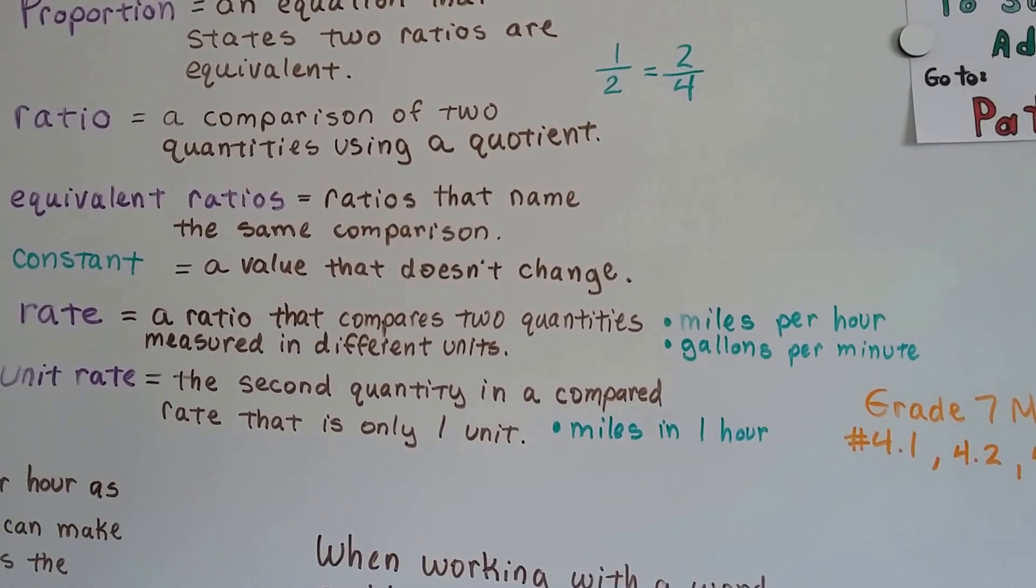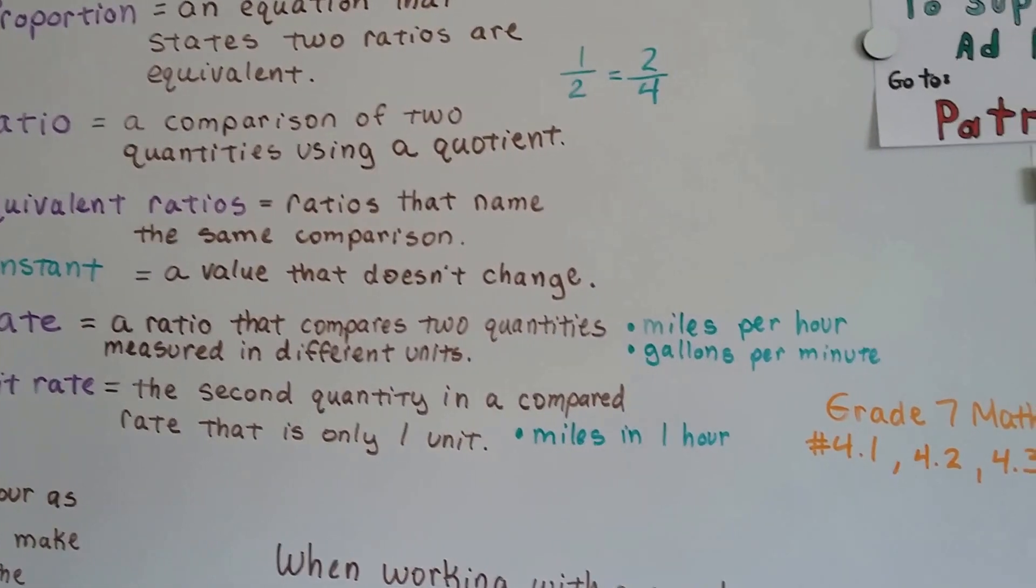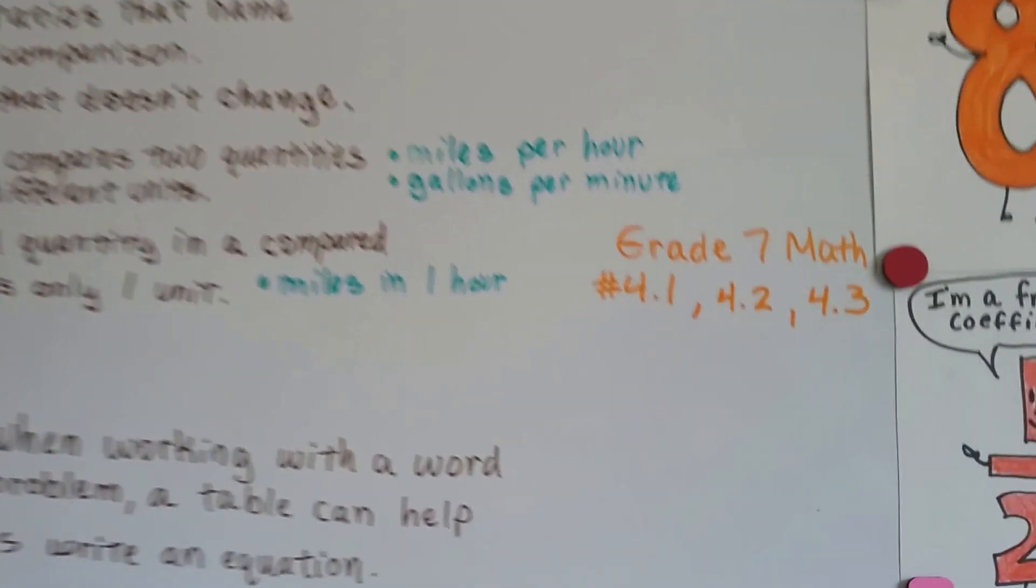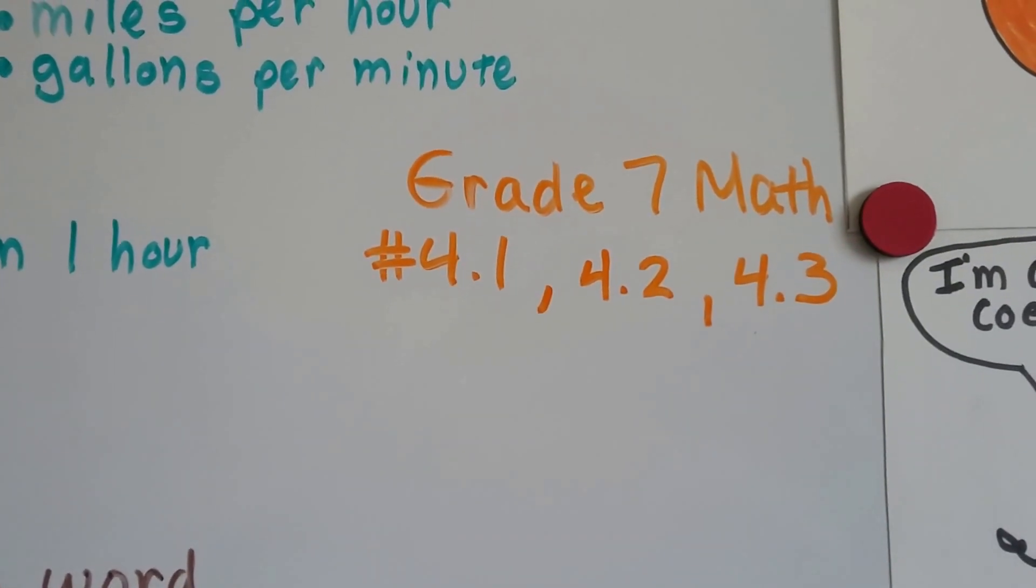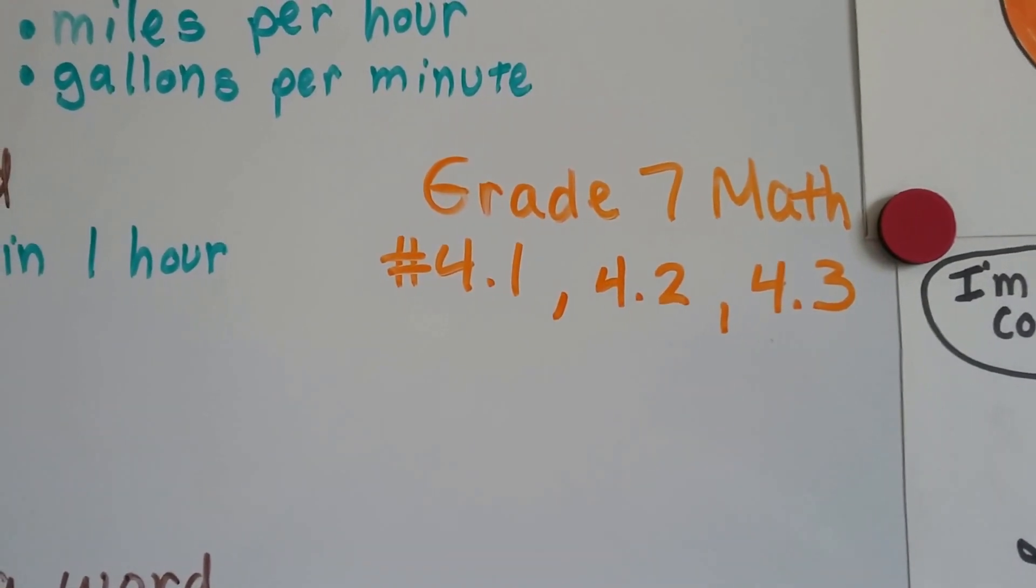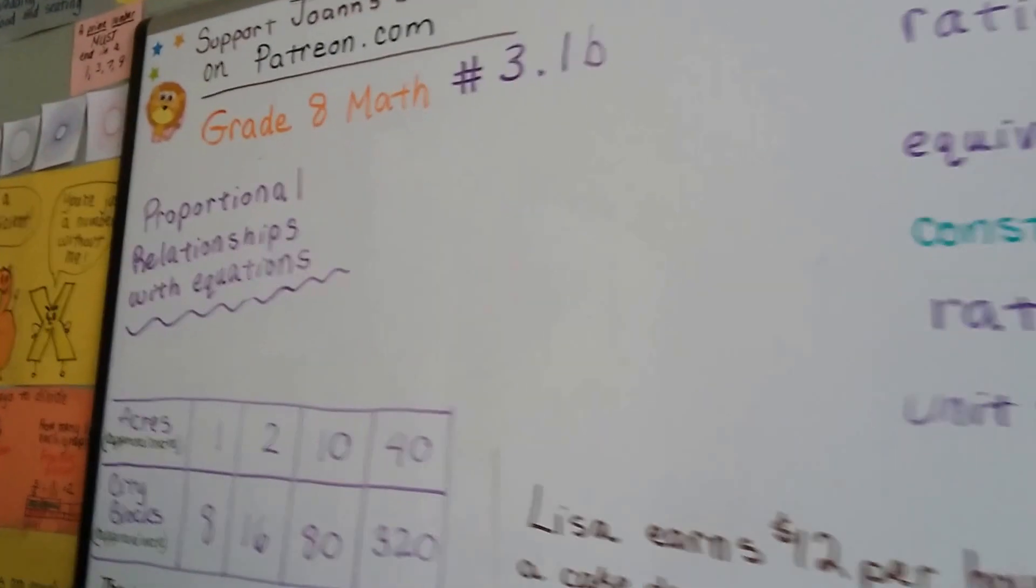And a unit rate, that's the second quantity in a compared rate that is only 1 unit. If you're really confused about proportions, try going back to my Grade 7 math playlist and watch 4.1, 4.2, and 4.3 videos, and that'll help you. You can also try watching 3.1a, the video before this one.